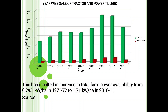Next one is the year-wise sale of tractors and power tillers. The horizontal line indicates the years from 2004 to 2012, and the vertical line shows the number of sales: 1 lakh, 2 lakh, 3 lakh, 4 lakh, 5 lakh, and 6 lakh. The green color shows the tractor sale and the red color shows the power tiller. In 2004 to 2005, tractor sales were very low at only 2.5 lakh and power tiller sales were below 1 lakh. Comparing with the current year 2012 to 2013, tractor sales increased to around 5 lakh 50,000 and power tiller sales also increased to around 50,000.